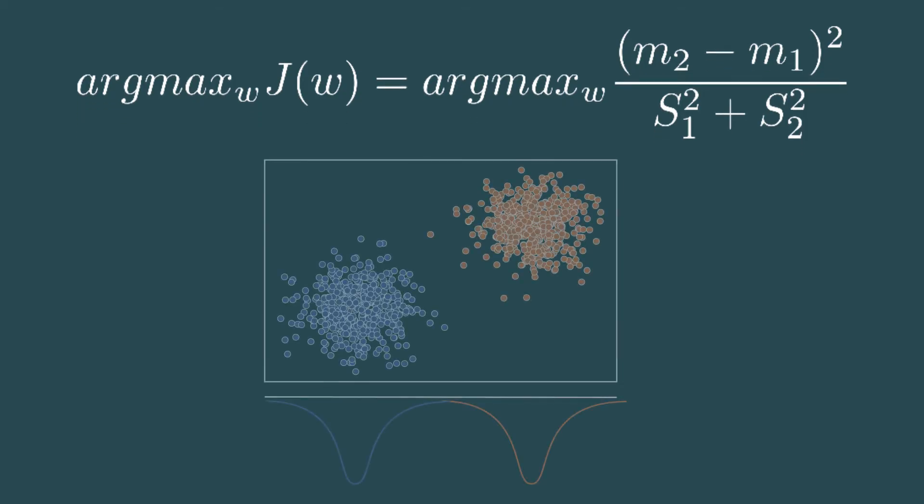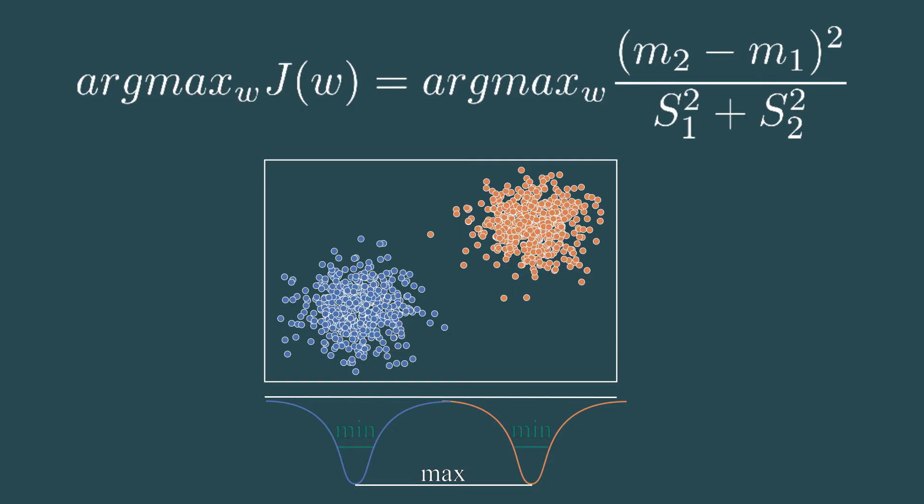You can think about the linear function as a projection to a line. In this projection, we want to increase the differences of the means of both classes. That means we want to place the centers of the distributions as far away as possible. We also want to minimize the denominator, which means reducing the covariance of the classes in the projection.